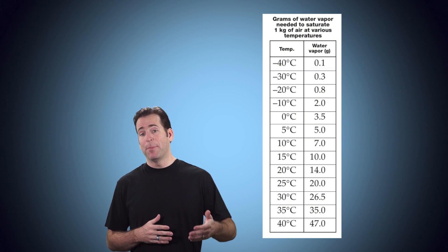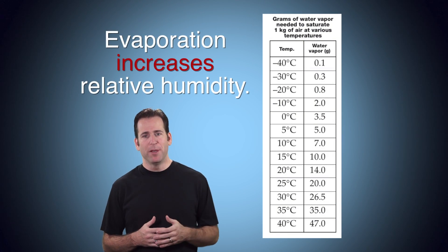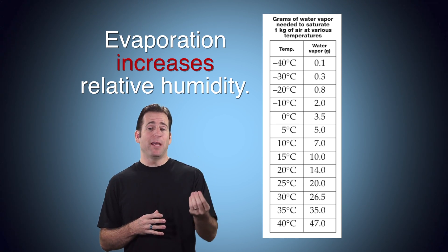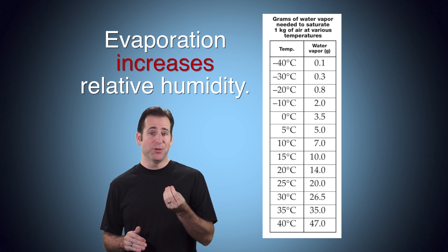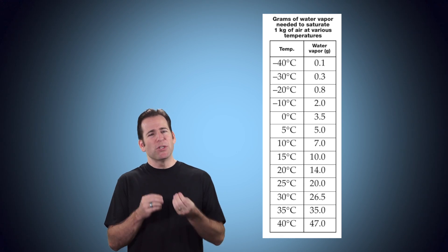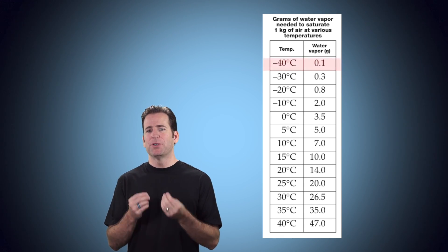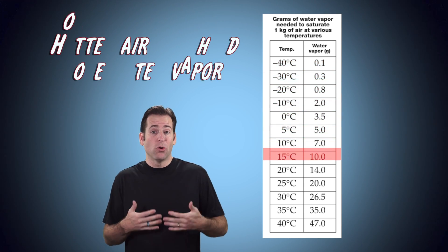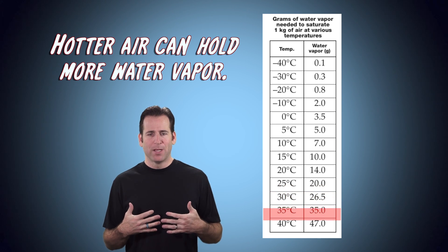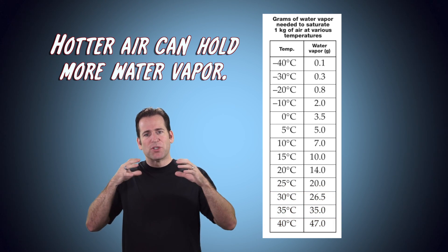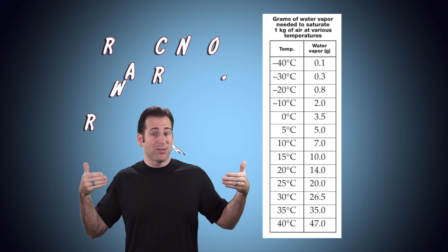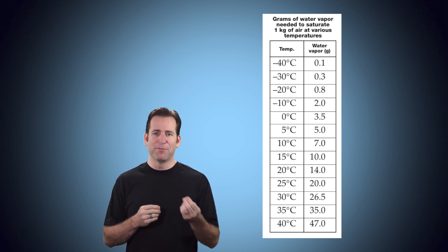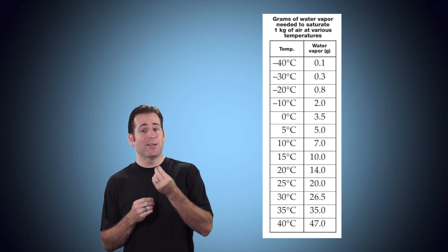As water evaporates and joins the air, relative humidity increases. As water condenses and comes out of the air, relative humidity decreases. Humidity is always relative because the percentage depends on the temperature of the air. Hotter air has more room for water and can hold more — hotter air is more spread out and provides more space, whereas cold air contracts and provides less room. Therefore, cold air can hold less water vapor.